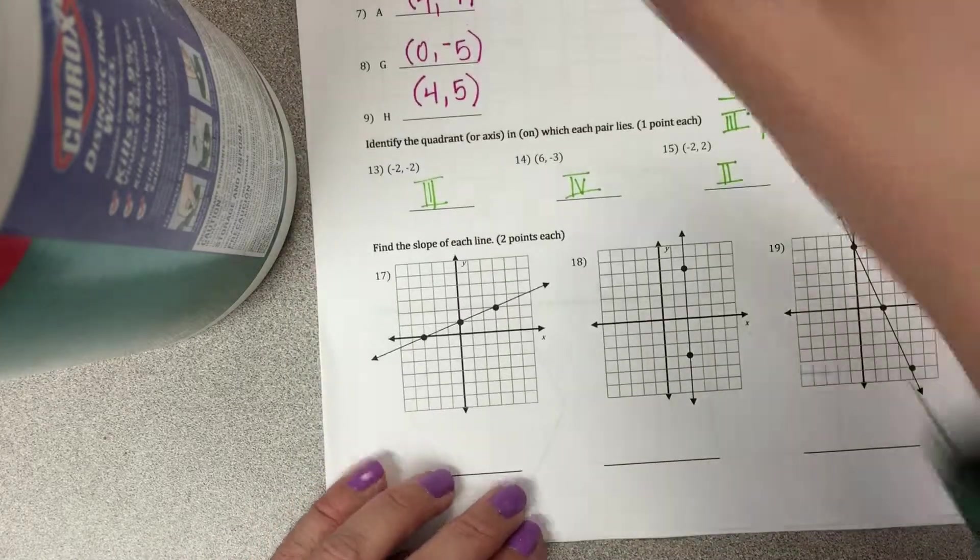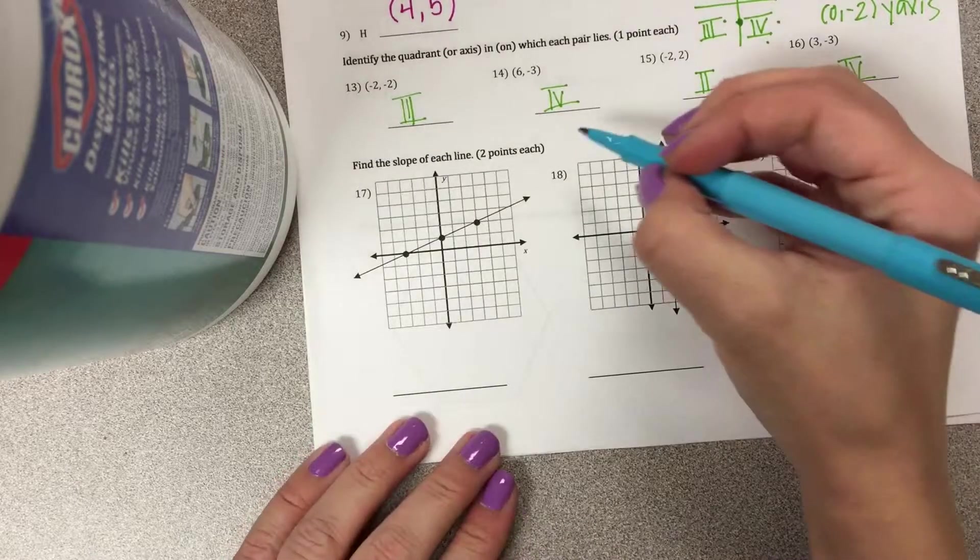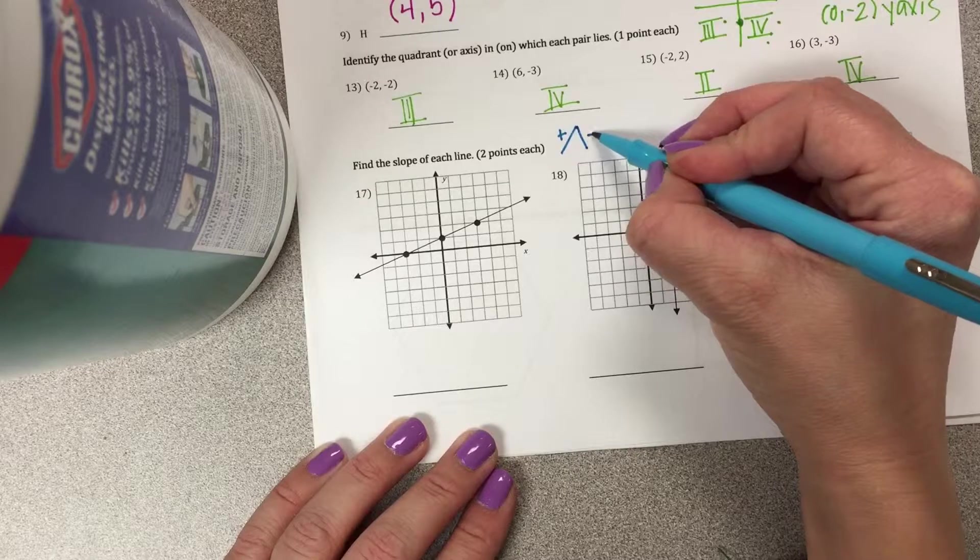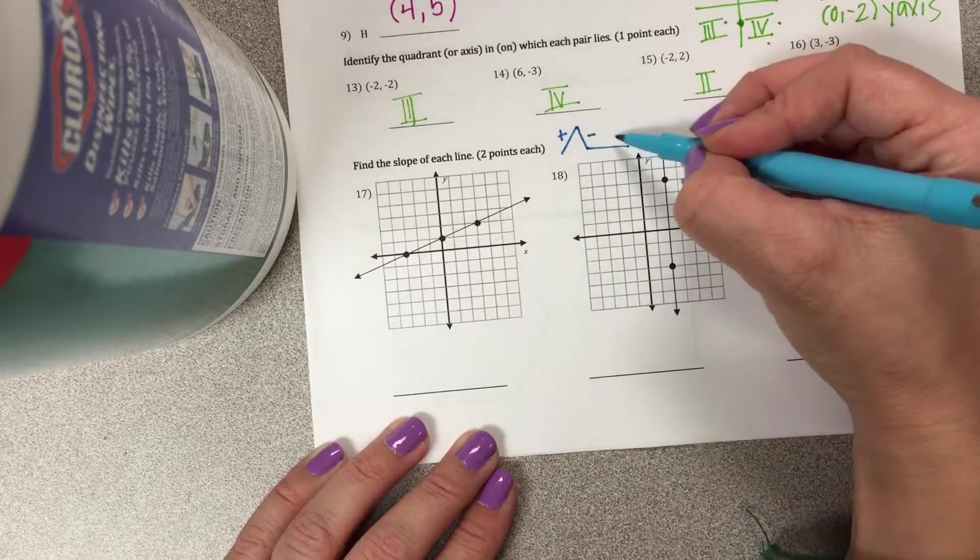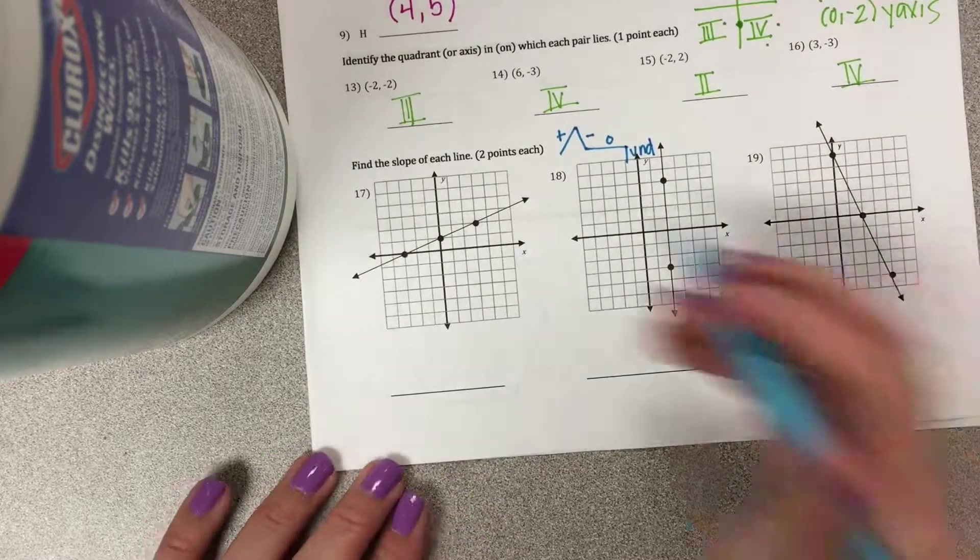And then the next section says find the slope of each line. So remember slope dude, going up the mountain, puff puff positive, down the mountain, nice negative, 0 fun, and then undefined. And he only moves left to right.